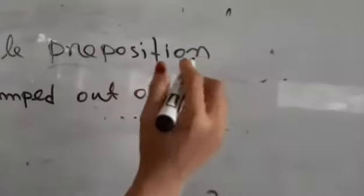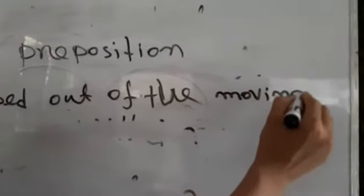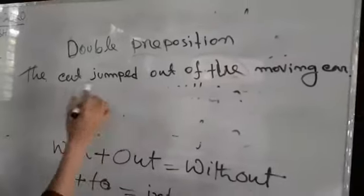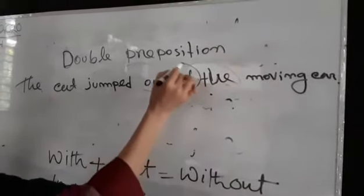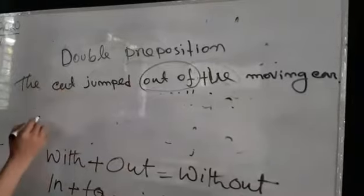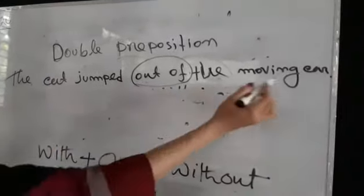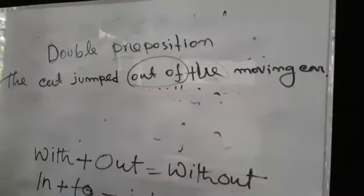The cart jumped out of the moving cart. Here the word 'out of' is double preposition. The cart jumped out of the moving cart. Here the word 'out of' is double preposition.